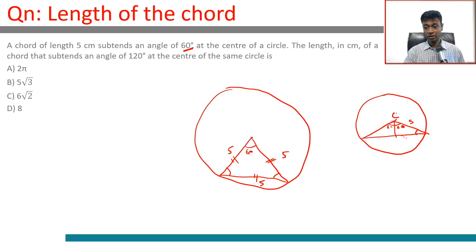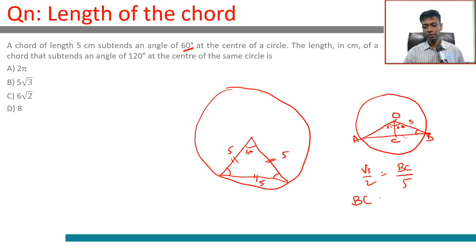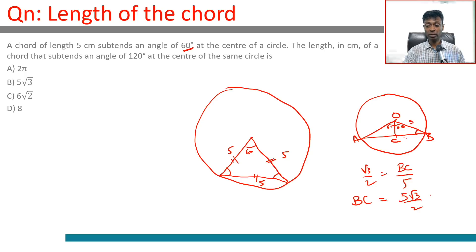Let's name the points. Pause if you haven't got the answer yet. sin 60 = BC / OB, so root 3 over 2 equals BC over 5, giving BC = 5√3 / 2. Therefore AC is also 5√3 / 2, and AB = 5√3 / 2 + 5√3 / 2, which equals 5√3.